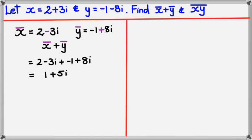Now looking at the second one, what we actually need to do is work out the product of xy first. So that's what I'm going to do. I'm going to work out xy first. So I've got 2 plus 3i multiplied by negative 1 minus 8i.